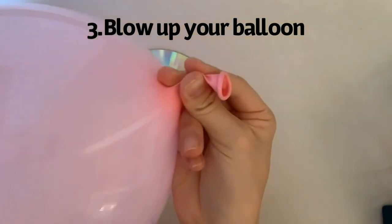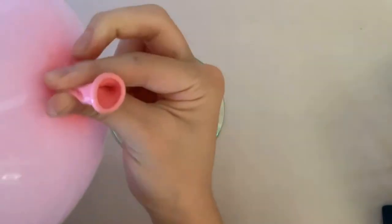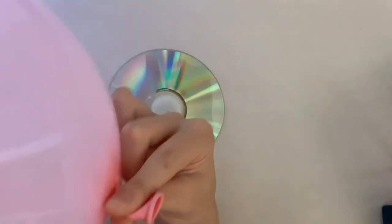Now you're going to take your balloon, blow it up, and twist the end a bit. Twisting the end will prevent the air from releasing too early.